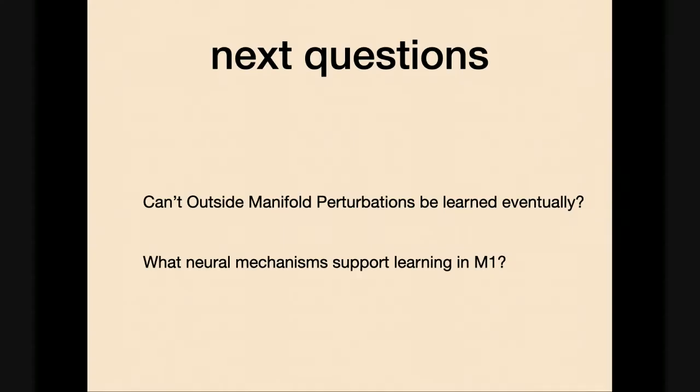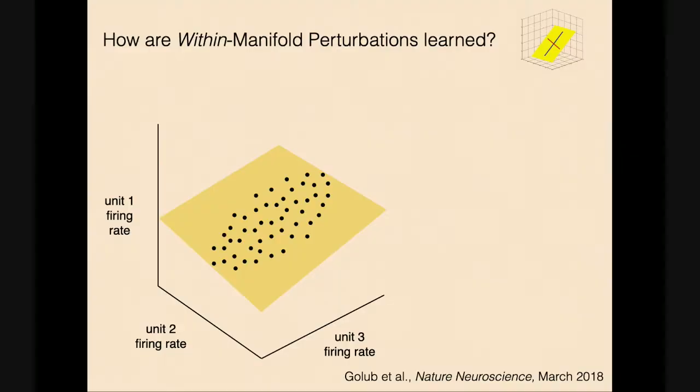When you give the animal an outside-manifold perturbation, there's really no learning. There are little fits and starts where he seems to do okay, then you take it away — no after-effect. He seems relieved, because whatever he's been doing, he can just keep doing it. Nothing to unlearn because there was no learning. So here's the first key finding: learning is subject to neural constraints. Something about the pre-existing patterns of neural activity sets what you can learn to do rapidly. Behaviors that require forging new patterns of correlation among a population of neurons don't seem to be able to happen in a single day.